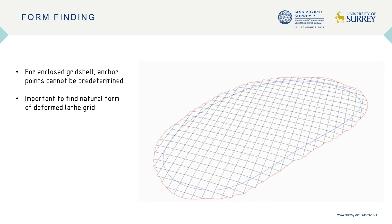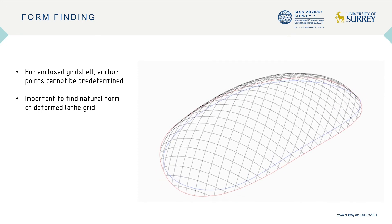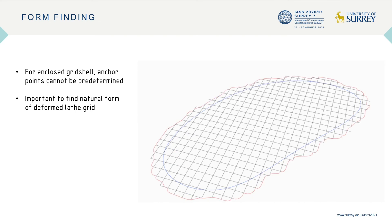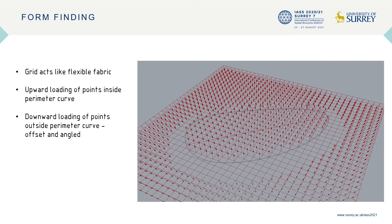We devised a method of form-finding for enclosed grid shells that requires no initial specification of form or anchor points. Our method uses loading on the nodes of the grid to create a form based on an input perimeter guide curve. The bending-resistant grid acts like a flexible fabric, pulled into shape by upward loading of points inside the curve and downward loading of points outside the curve. After some experimentation, we discovered better results by offsetting the downward forces and angling them toward the center to achieve steeper sides for more efficient space use in the finished grid shell.